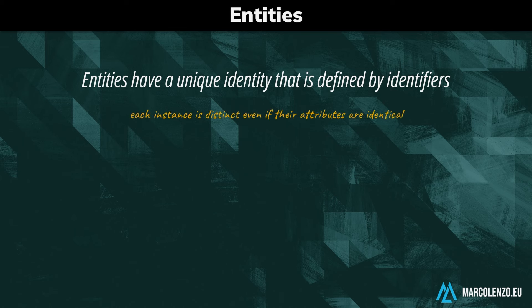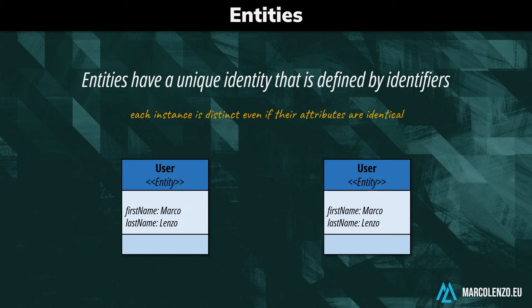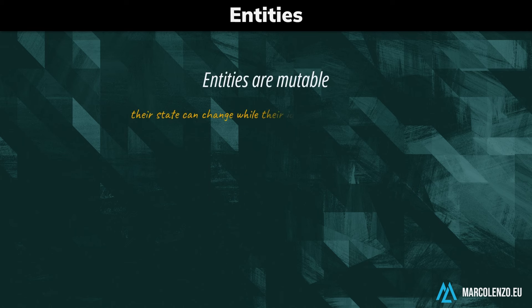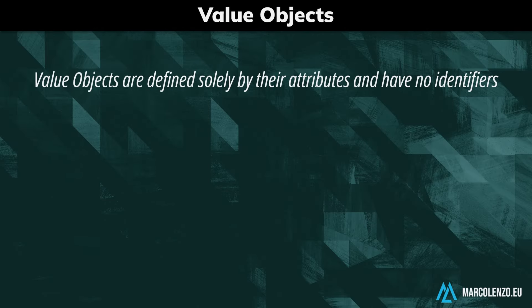Entities have a unique identity that is defined by identifiers. This means that each instance is distinct, even if their attributes are identical. Two people with the same first name and last name are not the same person — a unique identifier, like a user ID or social security number, distinguishes them. Entities are also mutable: their state can change while their identity remains constant. For instance, the price of a product can be updated multiple times, but its unique identifier, such as a stock-keeping unit, remains the same.